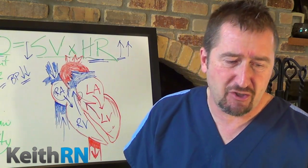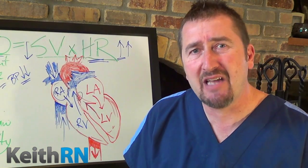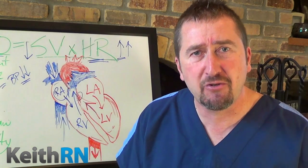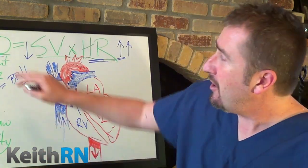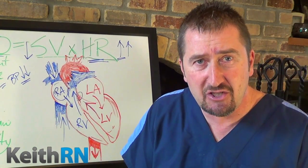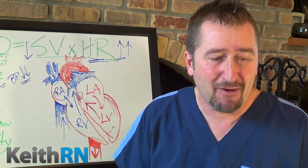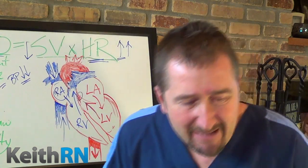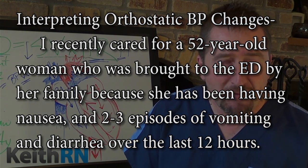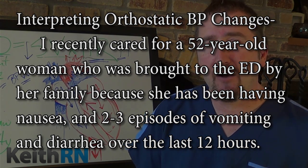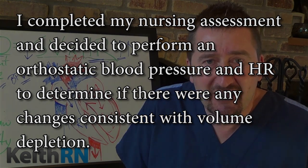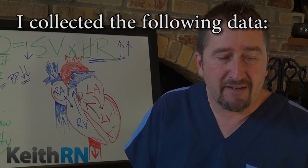Now let's talk about orthostatic blood pressure changes. What is a positive orthostatic and what is a negative orthostatic blood pressure? This is something that even fundamental textbooks don't agree on. But if you understand cardiac output equals stroke volume times heart rate, you as the nurse will be able to correctly interpret orthostatic blood pressure findings. I recently cared for a 52-year-old woman who came to the ER because of nausea, vomiting repeatedly, and diarrhea in the last 12 hours. I completed my nursing assessment and performed an orthostatic blood pressure and heart rate.